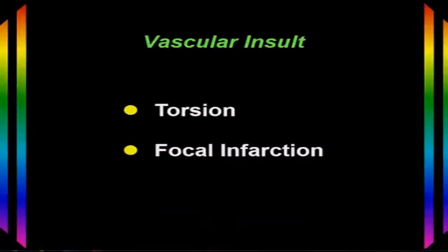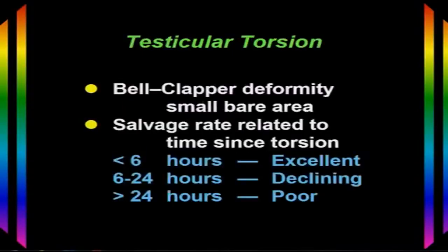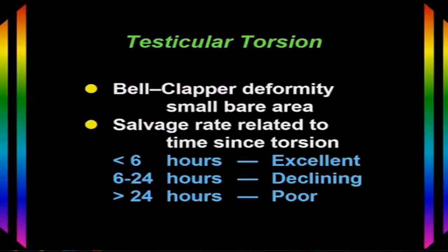The testicular parenchyma may suffer vascular insult in one of two ways: torsion, in which the whole testicle is involved, or a focal infarction. Testicular torsion occurs in men who have a bell clapper deformity, where the bare area anchoring the testicle to the scrotal wall is narrow, allowing the testicle to swing on its stalk and obstruct blood flow. The salvage rate after torsion is time-dependent: excellent if operated within six hours, declining from six to 24 hours, and quite poor after 24 hours.